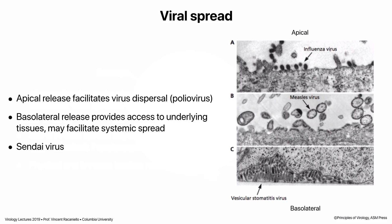Sendai virus is a paramyxovirus — a mouse virus. If you instill it into the respiratory tract of mice, they get a respiratory infection that remains localized. Investigators made a one amino acid change in the viral glycoprotein that gave the virus the new property of being shed from the basolateral domain. The wild-type Sendai virus is only shed from the apical domain and remains restricted to the respiratory tract. The mutant that can be released basolaterally causes a systemic infection in mice. It's a great example of how basolateral release is important for systemic spread.